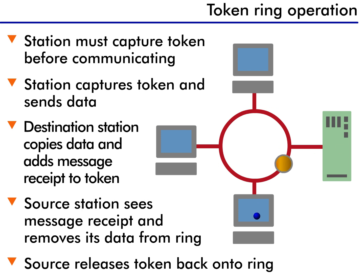Let's see how this works in operation. First, you have an operating network ring with a token rotating around it. Then one of the stations determines it has data to send. The station captures the token the next time it passes by.